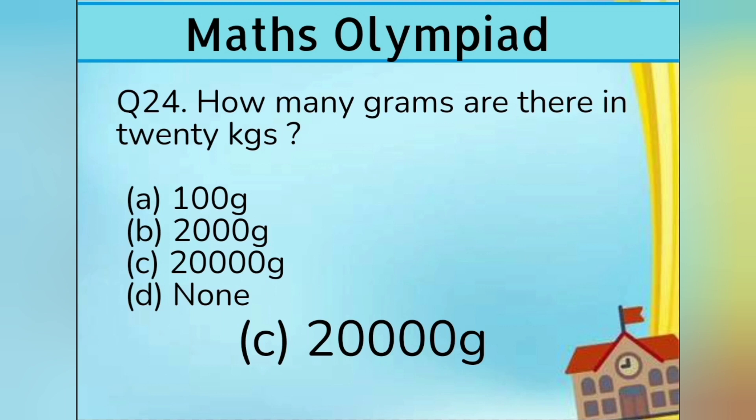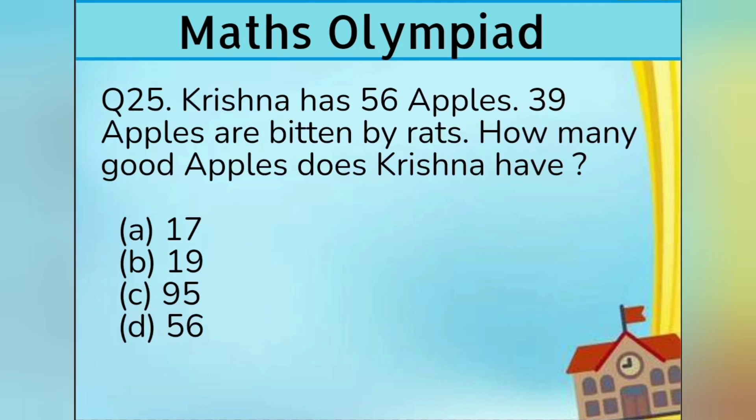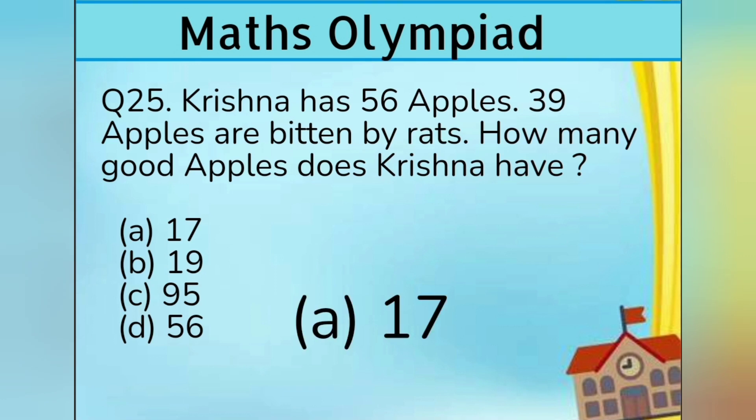Question number 25. Krishna has 56 apples; 39 apples are beaten by rats. How many good apples does Krishna have? Option A 17, Option B 19, Option C 95, Option D 56. Answer is Option A 17.